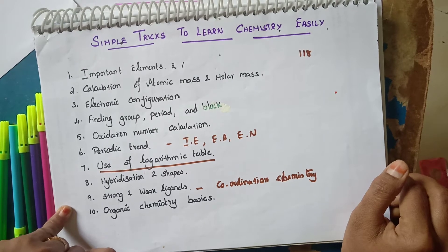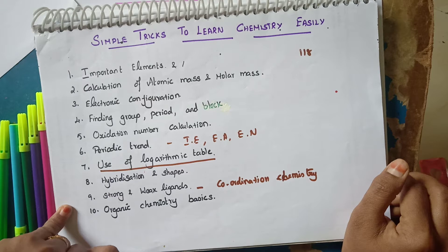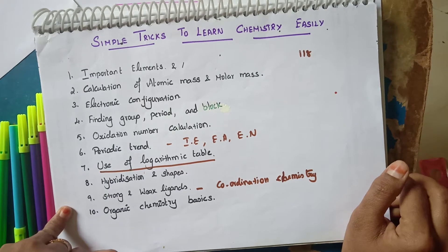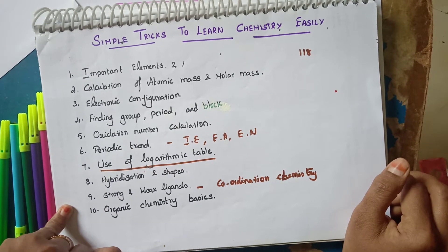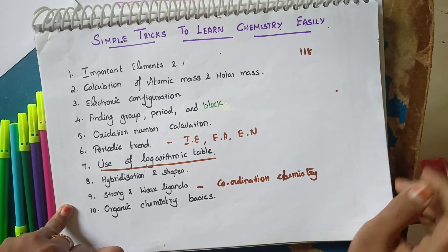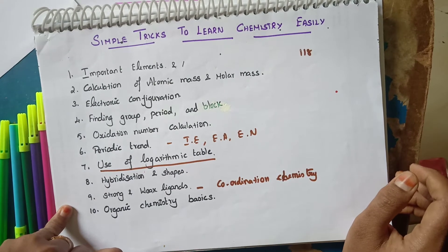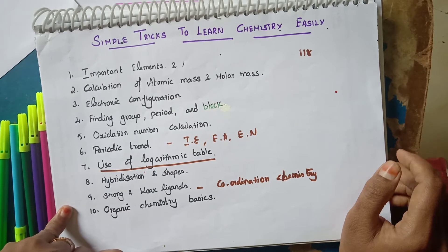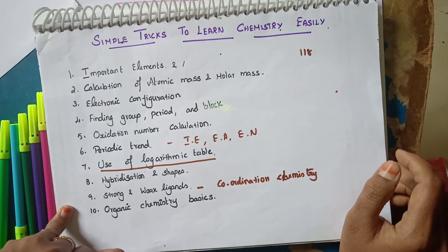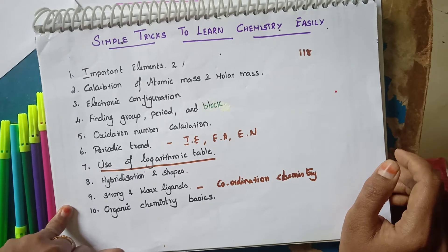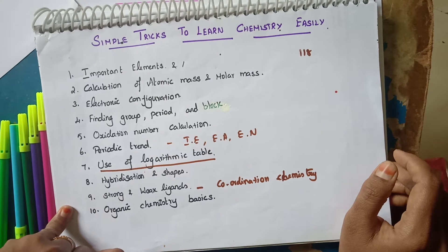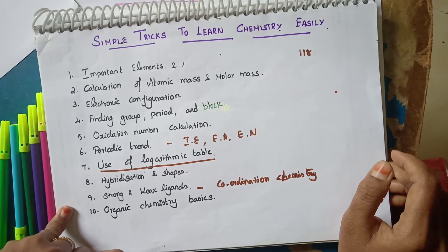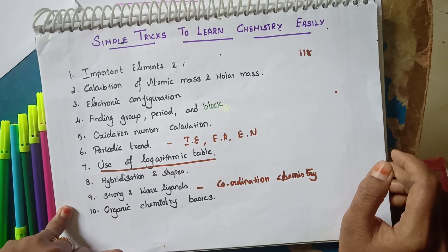According to my view, chemistry is not a difficult subject. You feel it is difficult because you do not know the basics properly. For example, take the English language — the basic is 26 alphabets. Without knowing the alphabets, you cannot learn English. Chemistry is also a language with its own basics.